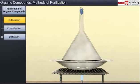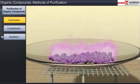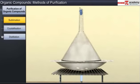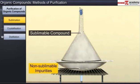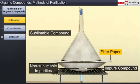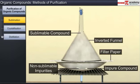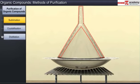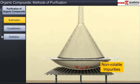Sublimation technique is used to purify sublimable solid organic compounds. Sublimation is a process which involves the conversion of a solid directly into vapor without any intermediate liquid state. This process is used for separating sublimable compounds from non-sublimable impurities. The impure substance is heated in a dish covered with a perforated filter paper over which an inverted funnel is placed. The stem of the funnel is plugged with a little cotton. Vapors of the solid which sublime pass through the holes in the filter paper and condense on the cooler walls of the funnel. The non-volatile impurities are left behind in the dish.